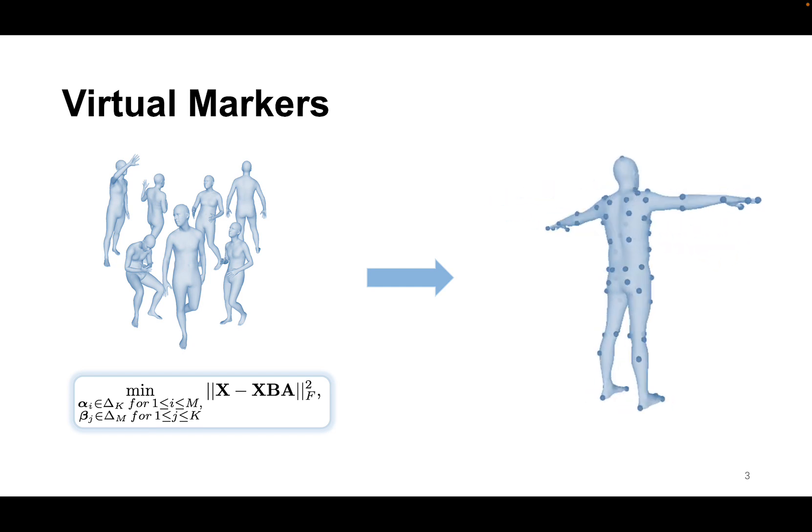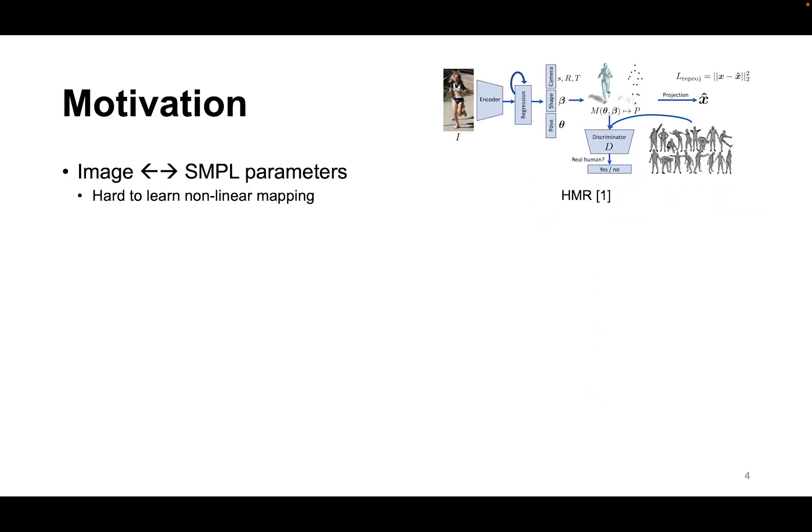The pioneer methods such as HMR propose to regress the pose and shape parameters of the SMPL models directly from images. While straightforward, their accuracy is usually limited since the mapping from the image features to the model parameters is highly non-linear and suffers from image model misalignment.